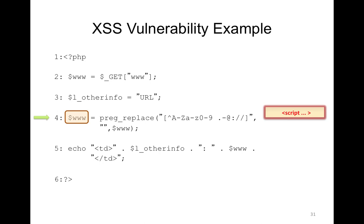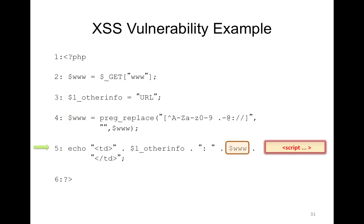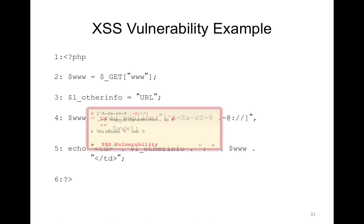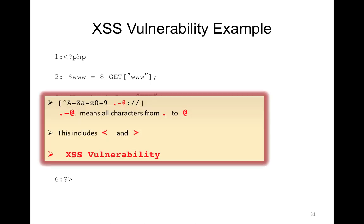So this is a cross-site scripting vulnerability. The developer forgot to escape the dash. The dash is a special symbol indicating that the characters from dot to at-sign are included in the character class. The developer wanted to delete all characters not in this character class, but since less-than is in this character class, it is not going to be deleted.